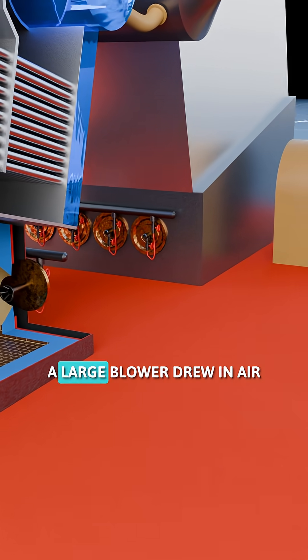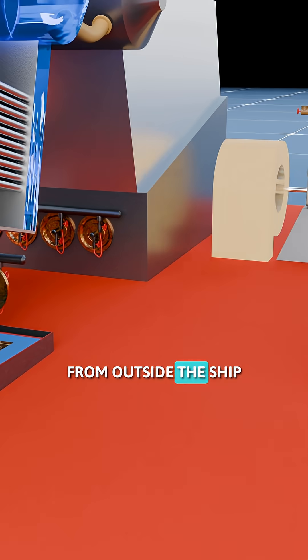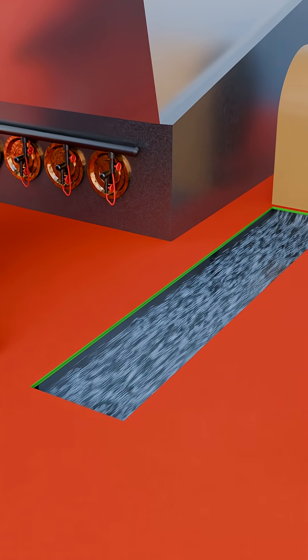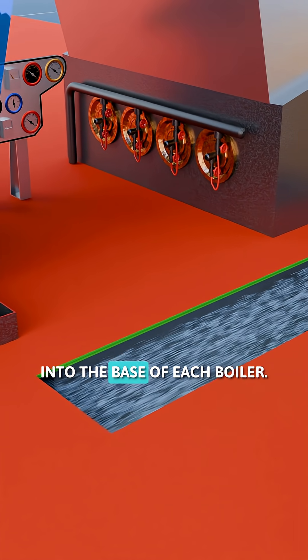At the same time, a large blower drew in air from outside the ship and pushed it through a duct beneath the floor, forcing it upward into the base of each boiler.